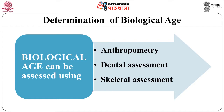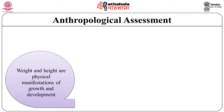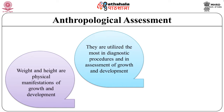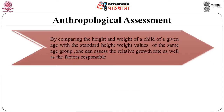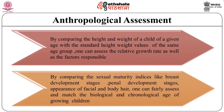Biological age can be determined through anthropological assessment. Weight and height are physical manifestations of growth and development and are the most utilized measures in diagnostic procedures. Body mass is probably the best criterion of nutrition and growth, as it sums up all increments in size. By comparing height and weight of a child of a given age with standard values for the same age group, one can assess relative growth rate. Comparing sexual maturity indices such as breast development stages, penile development stages, and appearance of facial and body hair can also fairly assess biological and chronological age.